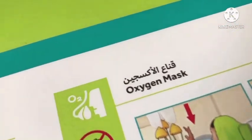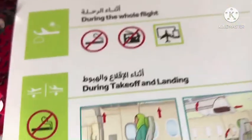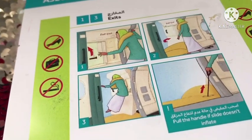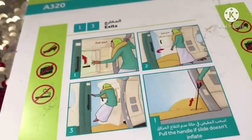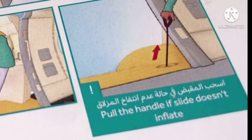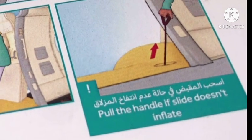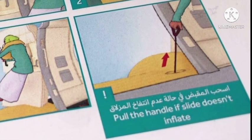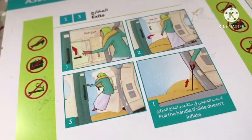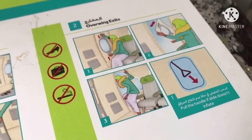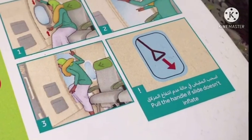Now you can review all what we learned. It's not over yet — we have exits. Different types of exit: first we have al-makharaj, which means exit. Pull the handle; if the slide doesn't inflate, follow the instructions shown.